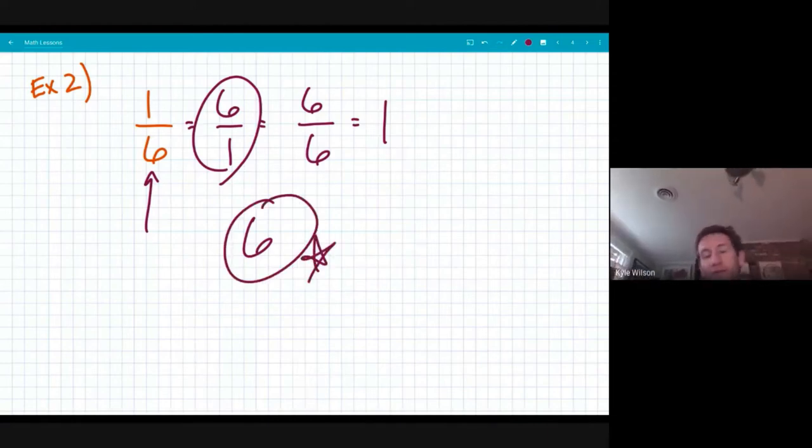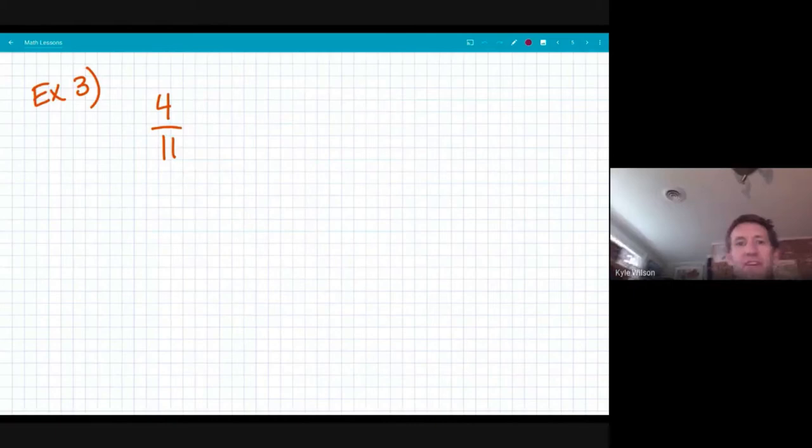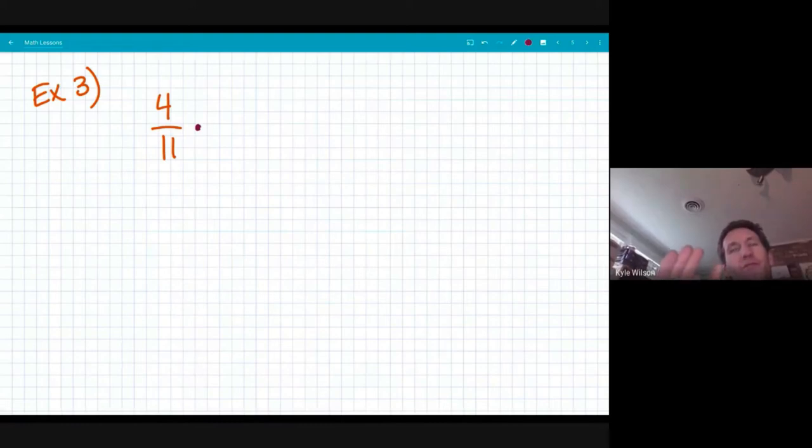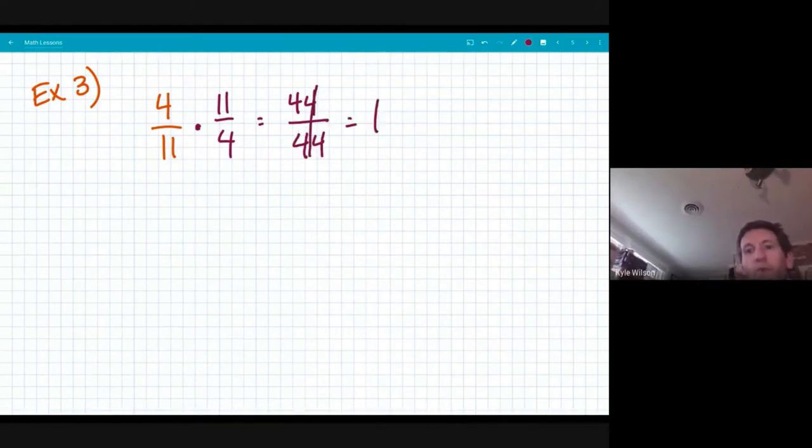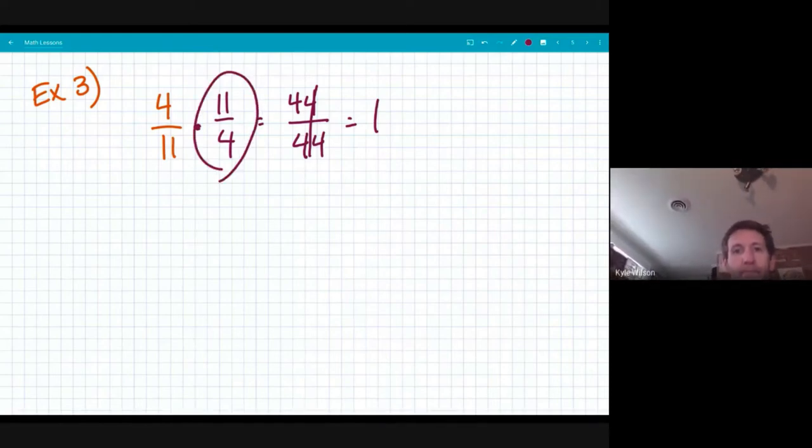That's the grade A answer to get. The next example I have would be four elevenths. And if you can recognize the pattern here, what answer is going to give me one or what product, what fraction could I multiply with four elevenths to get an answer of one? Eleven fourths. Four times 11 is 44. 11 times four is also 44. And you know that those equal one. So the reciprocal of four elevenths is 11 fourths.